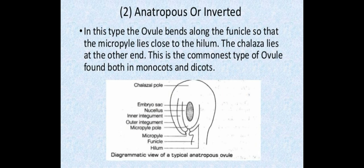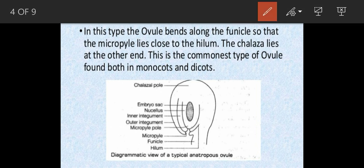The anatropous ovule, also called inverted type of ovule, has already been discussed in detail in previous videos and is also given in your NCERT. There is more than ninety percent chance the structure of this type of ovule can be asked in your exam. Here the micropylar end is toward the downside and chalazal end is on the upper side. The micropylar end and chalazal end are present in a straight line, whereas the funicle is present on the other side. This type of ovule is common in monocots and dicots.